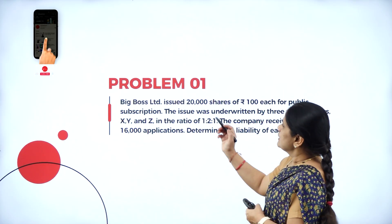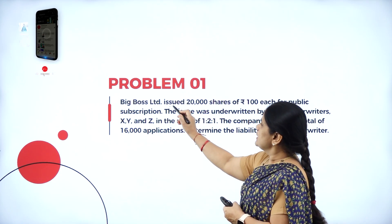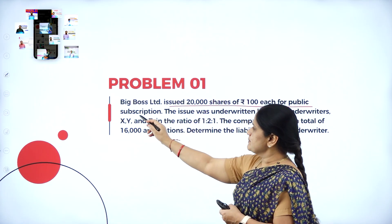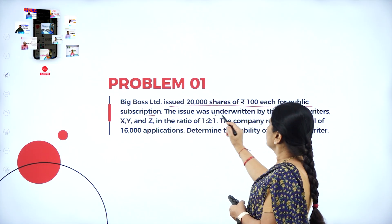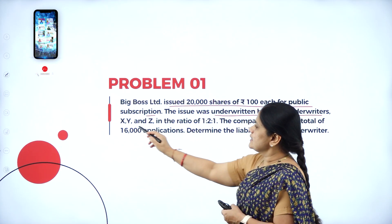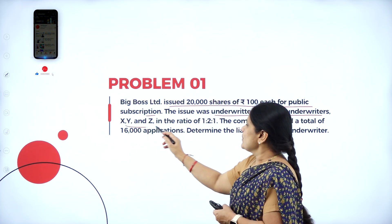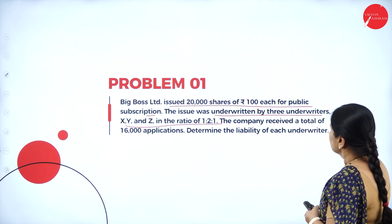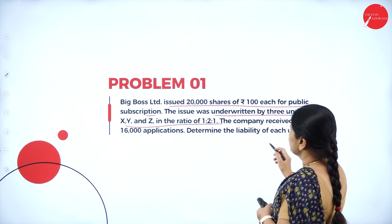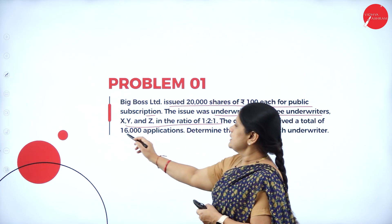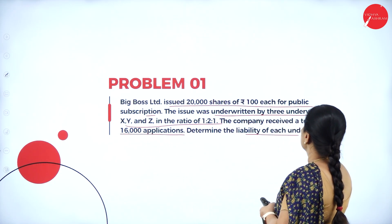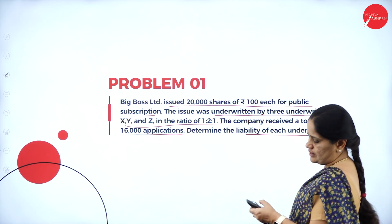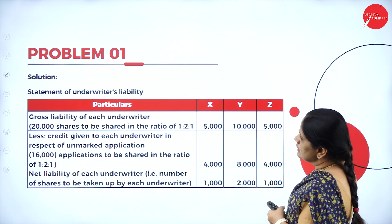The first problem: Big Boss Limited issued 20,000 shares of rupees 100 each for public subscription. The issue was underwritten by three underwriters X, Y, and Z in the ratio of 1 is to 2 is to 1. The company received a total of 16,000 applications. Determine the liability of each underwriter.